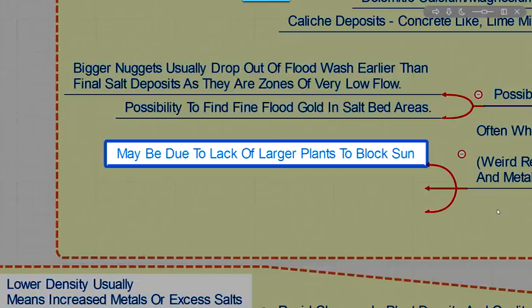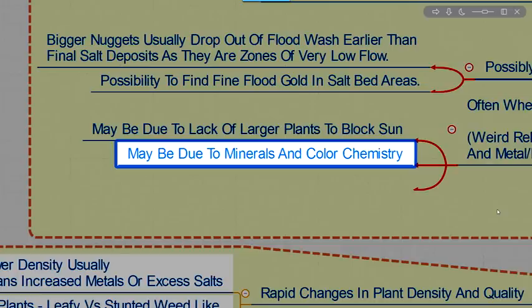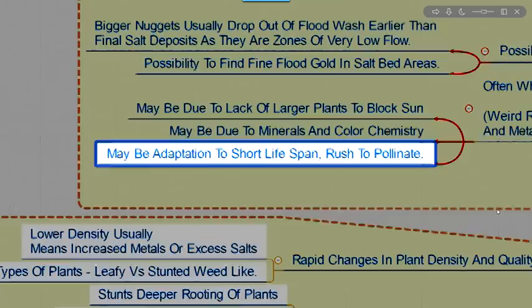It may be due to the lack of larger plants to block the sun. That allows them to come out and bloom very quickly. But they're also going to disappear very quickly because there's no shade. It may be also due to those minerals, like I said, and the color chemistry that goes on. It may be an adaptation to a very short lifespan. They're rushed to pollinate by the bees.